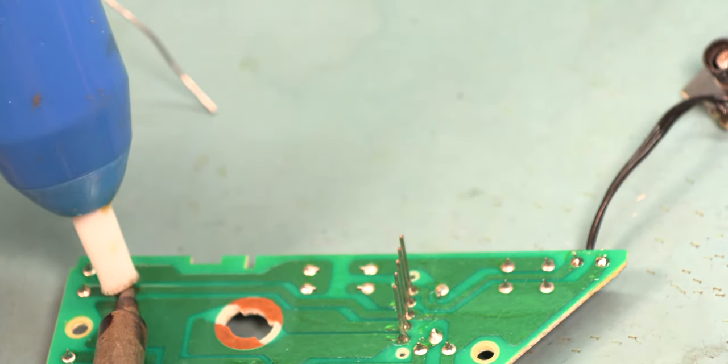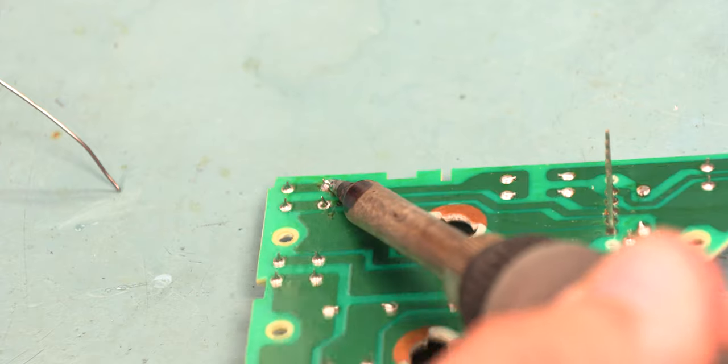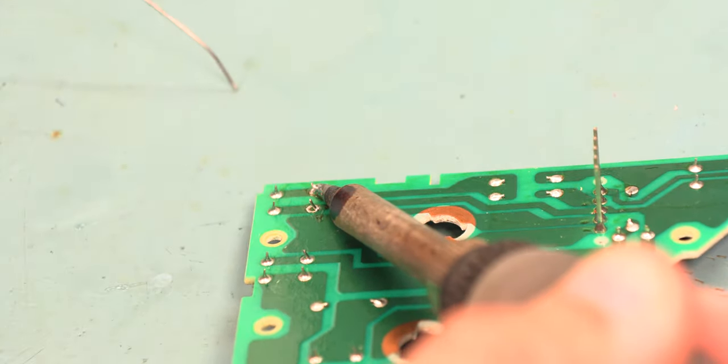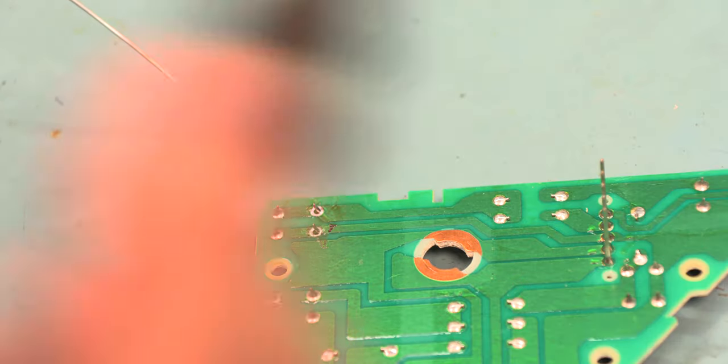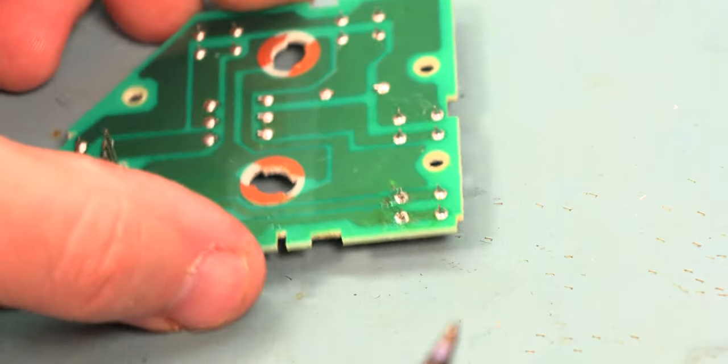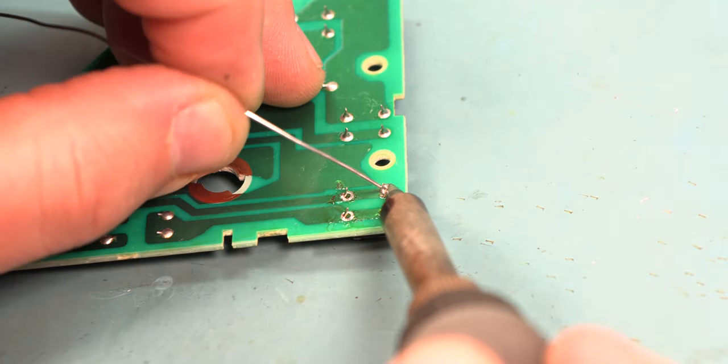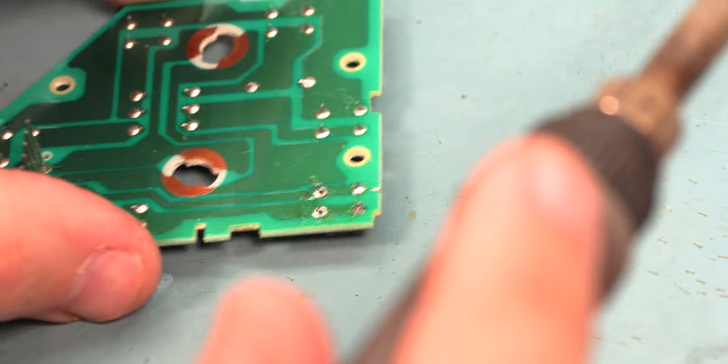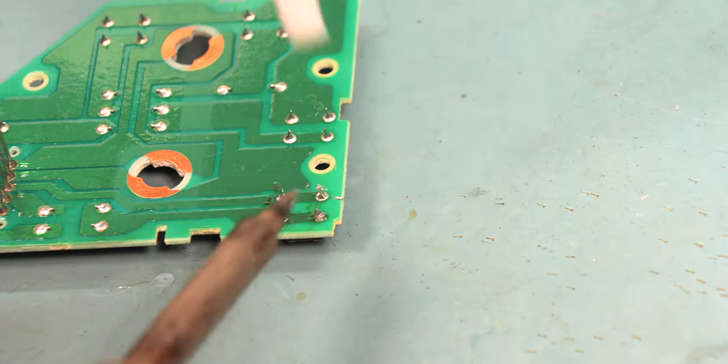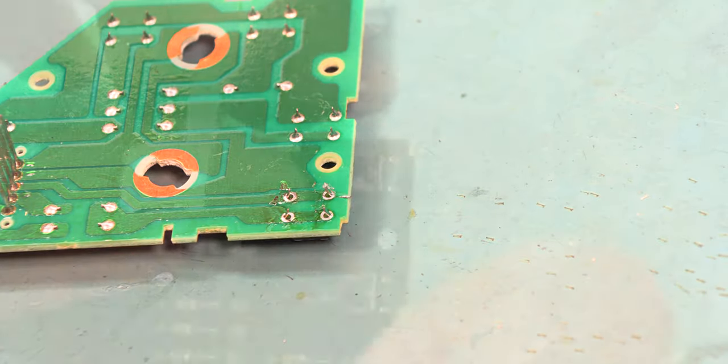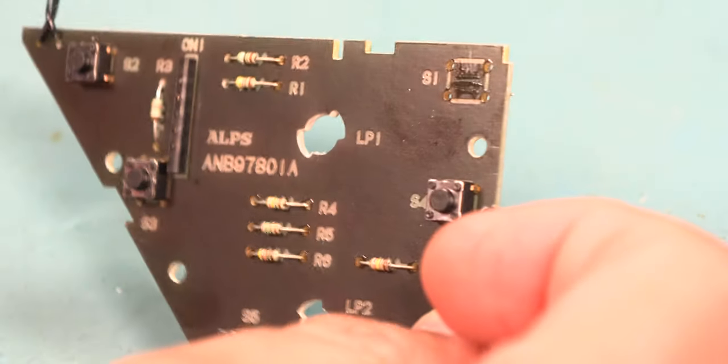We'll use our vacuum solder removal tool to remove the solder one leg at a time. To do that, we heat the joint. We feed in a small amount of fresh solder which adds rosin to clean the joint. We'll vacuum away the solder. When the solder has been removed, the component can be pulled free. We'll repeat that with the next five switches.